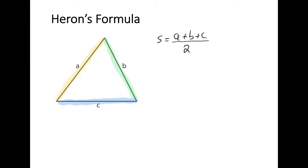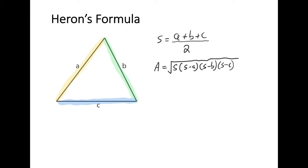After we've got our S value, we can use Heron's rule to calculate the area. That rule is that the area is going to equal the square root of S multiplied by (S minus A), multiplied by (S minus B), multiplied by (S minus C). Those are the two formulas we need to calculate the area of a triangle using Heron's formula.